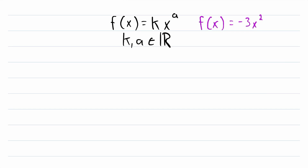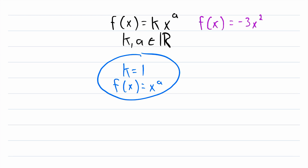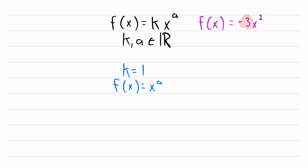I should point out that I have seen power functions being defined with the restriction that k is equal to 1. If this is the case, then power functions just look like this: f of x equals x to the power of a. Since the coefficient has to be 1 in this definition, we don't even need to bother writing it. By this definition, a function with a coefficient other than 1 is not a power function. Whereas f of x equals x to the power of the square root of 2 is a power function under either definition.